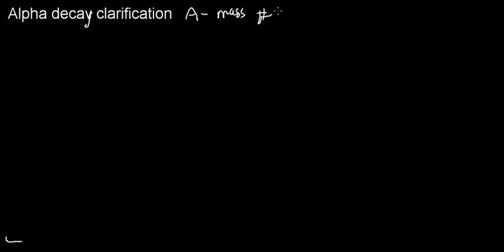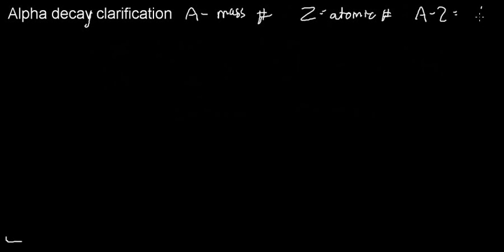Whenever you see A minus Z, this actually means the number of neutrons, which you can deduce. We already mentioned that when an alpha particle is emitted, it's basically a helium nucleus — a particle with two protons and two neutrons.